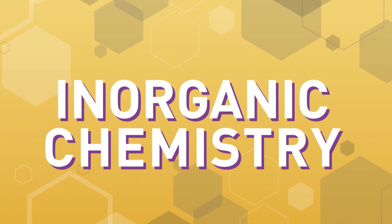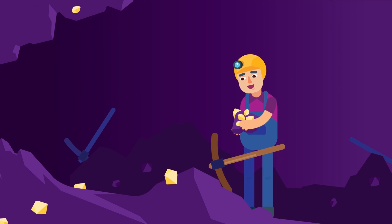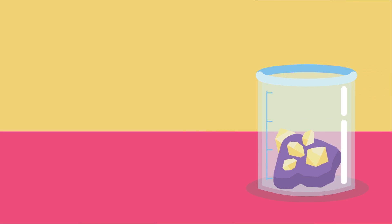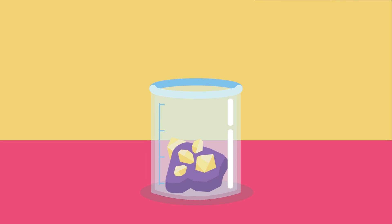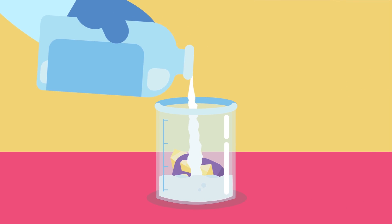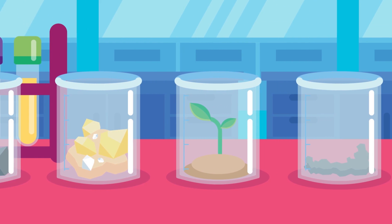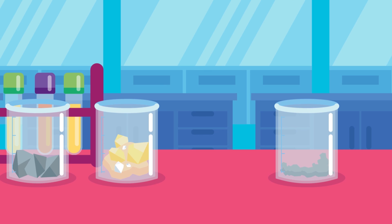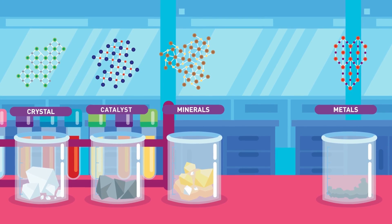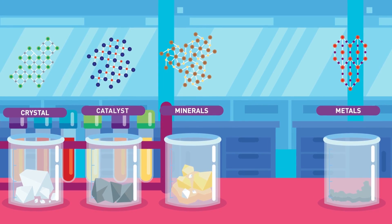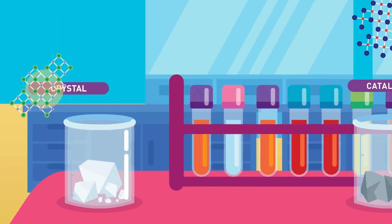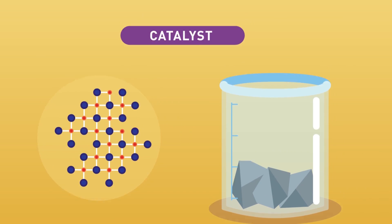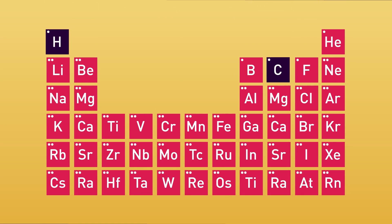Inorganic chemistry. Would you like to know how our earth forms gold? This is what inorganic chemists do. Inorganic chemistry deals with elements and compounds other than carbon or hydrocarbons. It covers all materials that are not organic and are termed as non-living substances — those compounds that do not contain a carbon-hydrogen bond. Compounds studied by inorganic chemists include crystal structures, minerals, metals, catalysts and most elements on the periodic table.